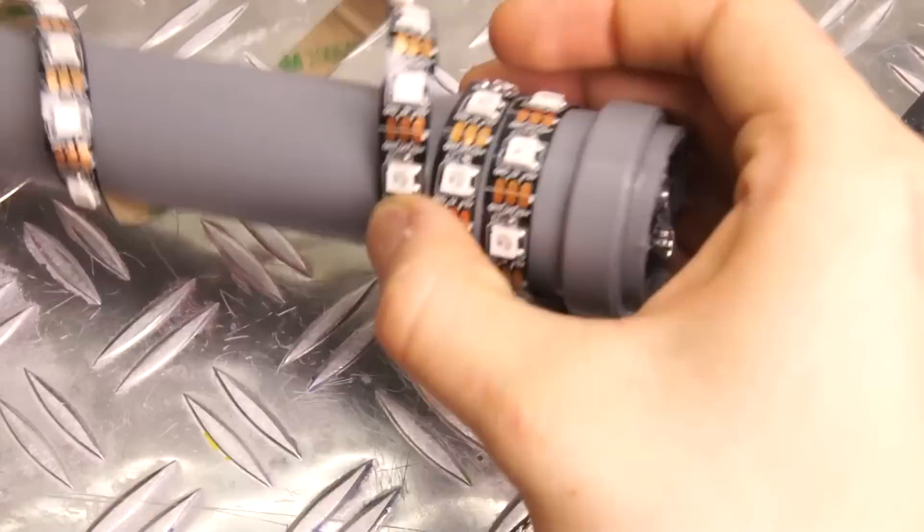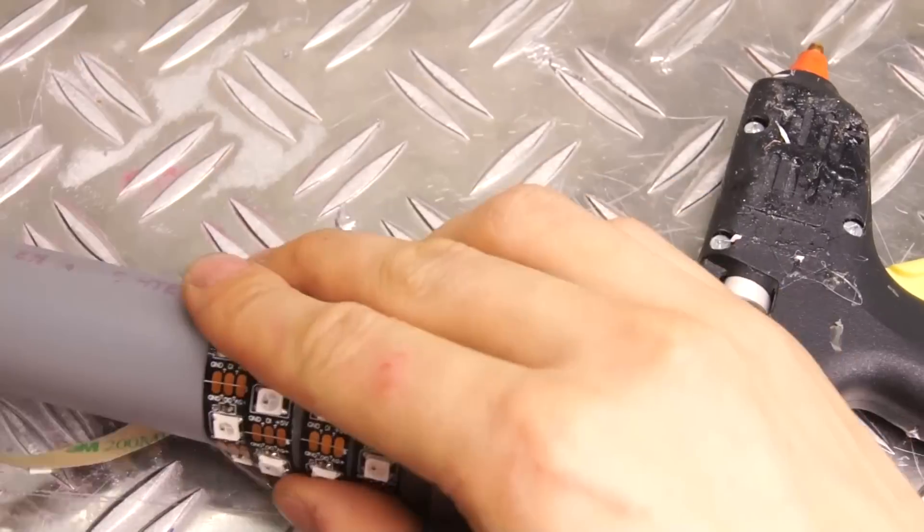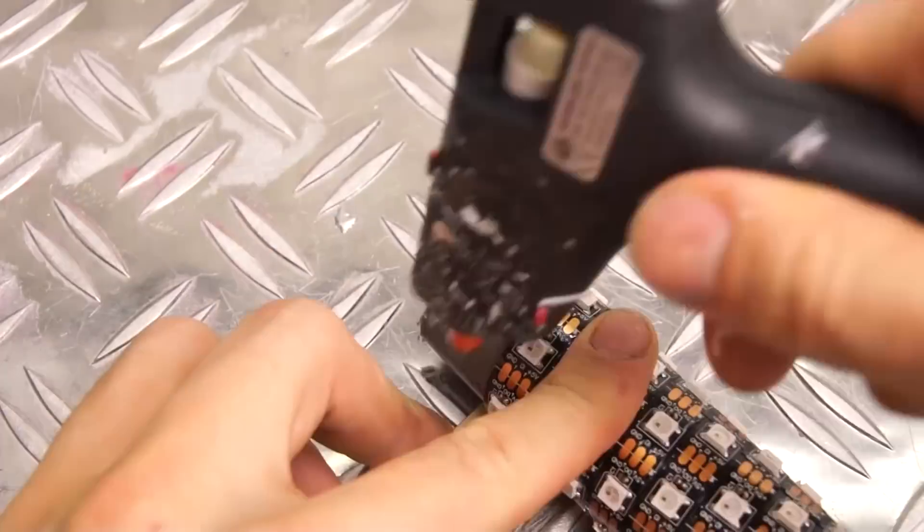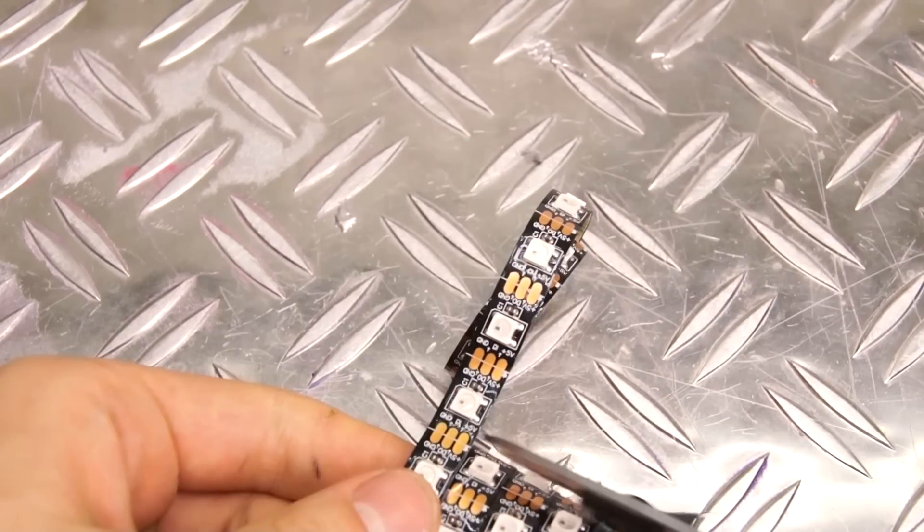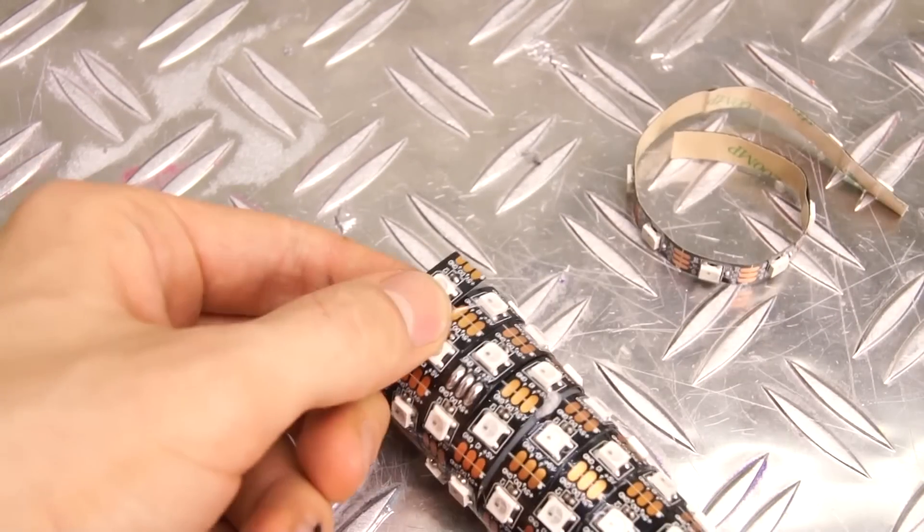Now we can carefully wrap the LED strip around the pipe. If you have enough you will get a stronger and more even light if you make sure that there is no space in between each round. We'll cut the strip at the top and glue it nicely in place.